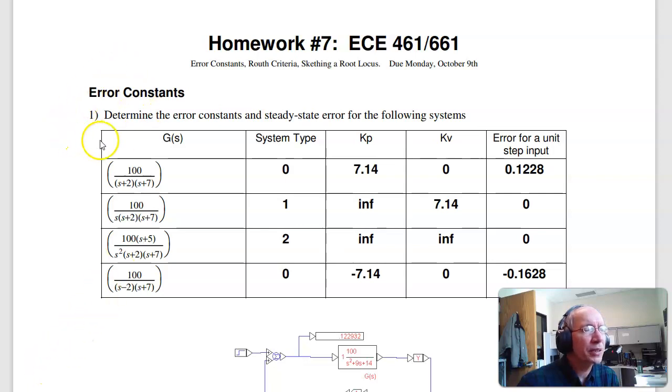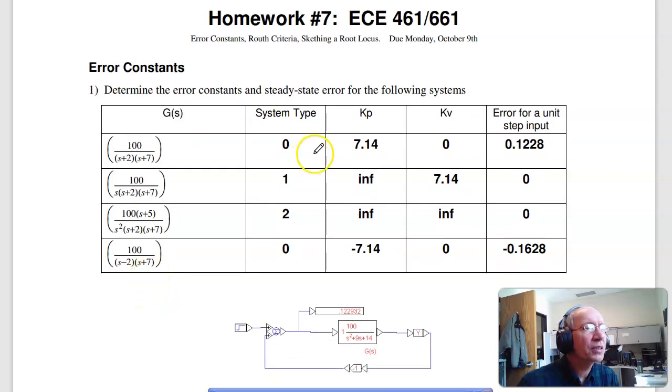The first problem is error constants. Given the following systems, find the system type, error constants, and error for step input. The system type is pretty easy - just count how many poles are at s equals zero. So this is zero, one, two, zero.